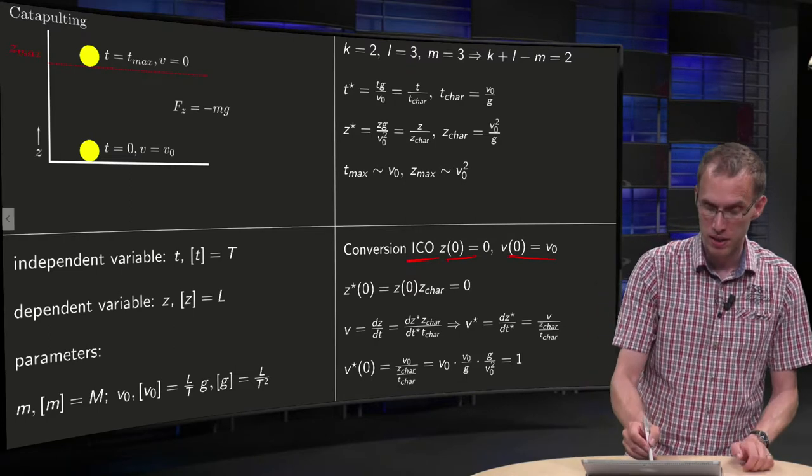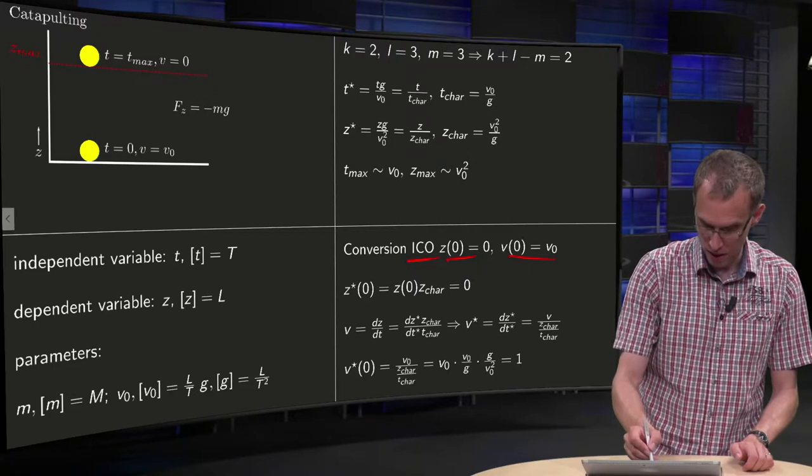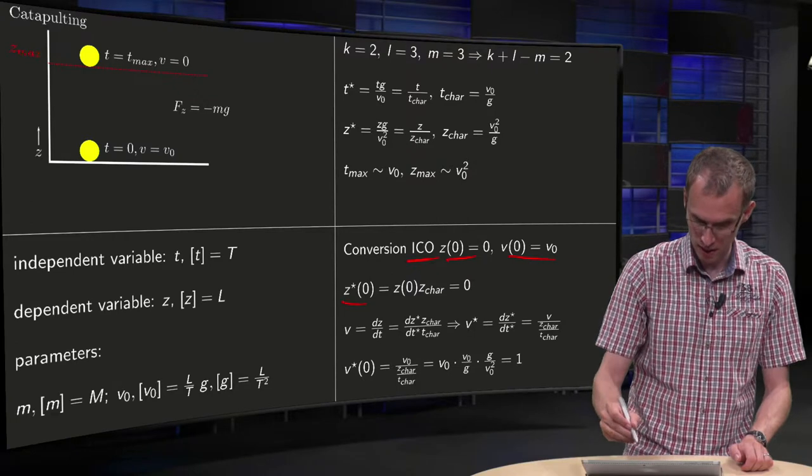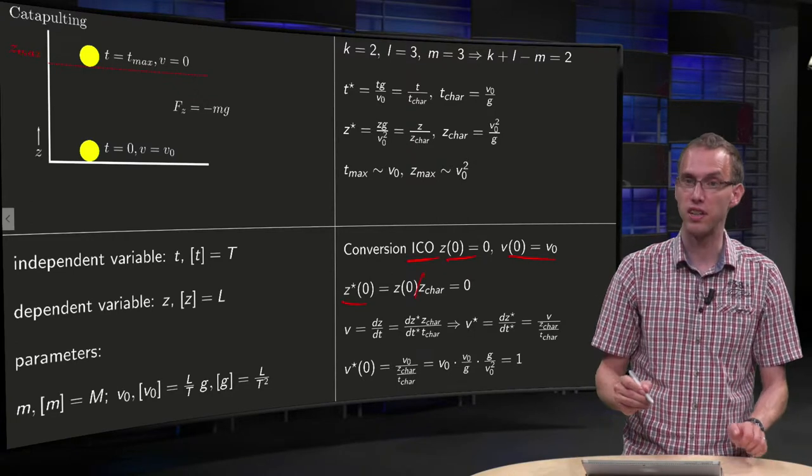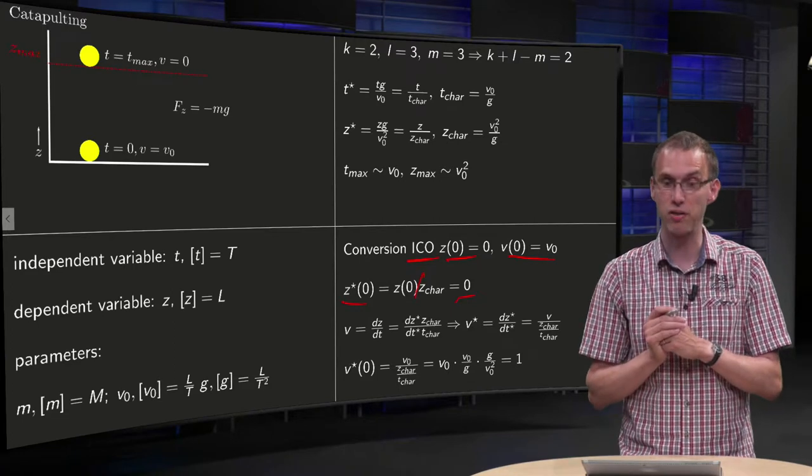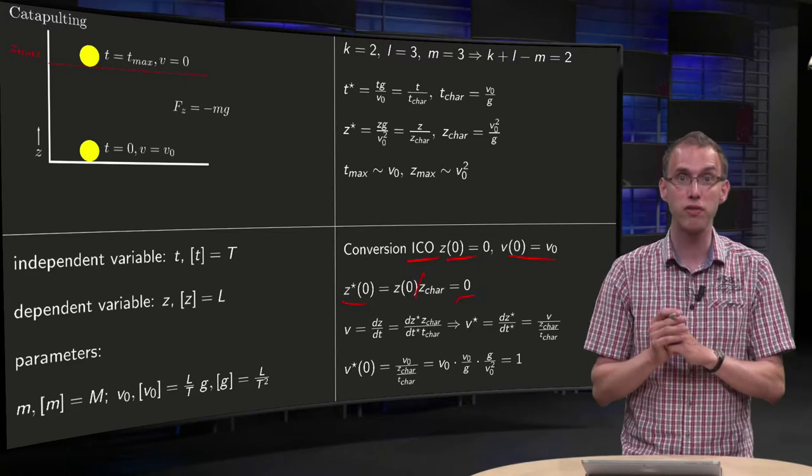Well, your z* of 0 should be z0 divided by z_char, which is just equal to 0 because z of 0 equals 0. So z* of 0 is also 0.